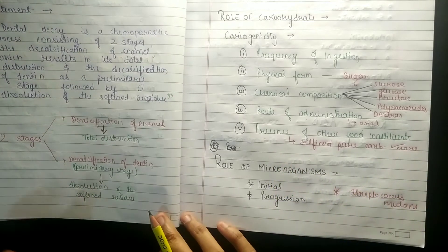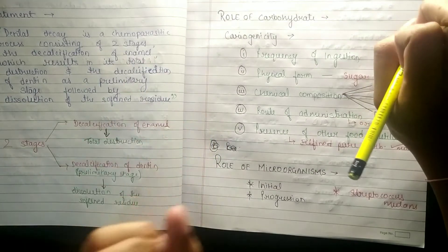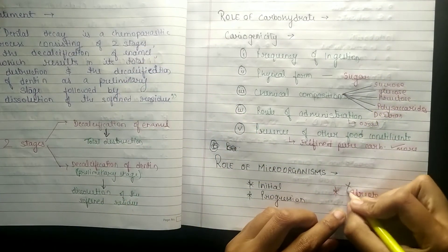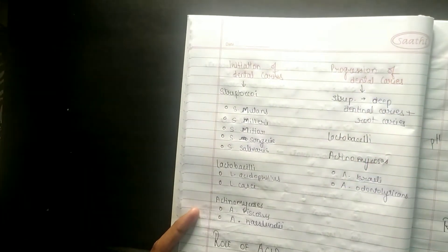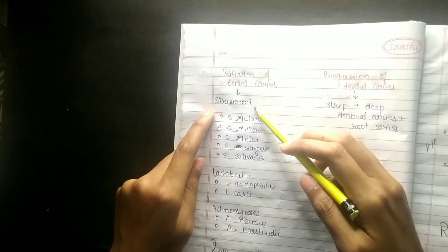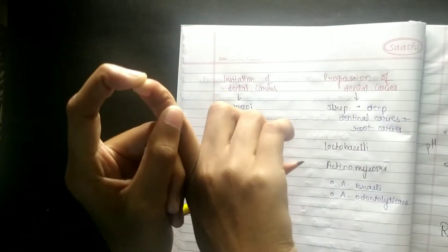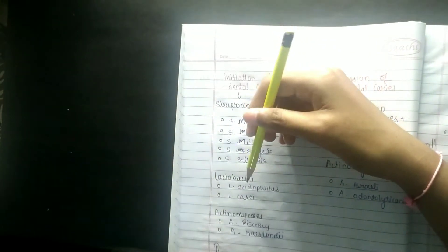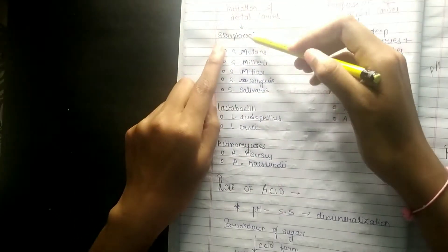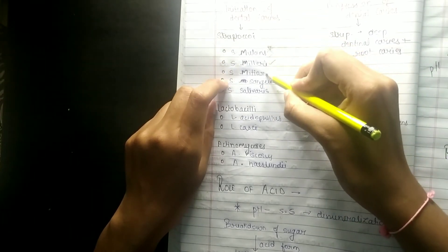There are two things: initial and progression. Initial microorganisms, then progression. Main progression of dental caries we will see - three things: streptococci, lactobacilli, actinomycosis. Streptococci main. Lactobacilli - how can you drink milk. Then actinomycosis. In streptococci: mutans, streptococci malaria, miture, salivaries. Streptococci salivaries, lactobacilli acidophilus.